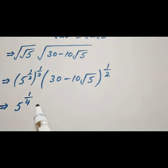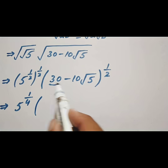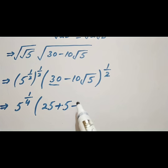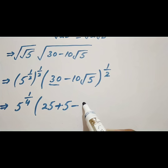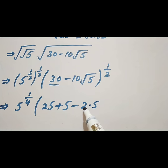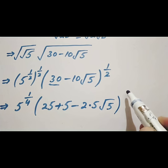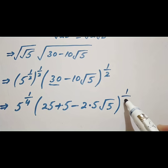And 30 can be written in the form 25 plus 5, and 10 can be written as 2 multiplied by 5, into square root of 5, higher root of 5.